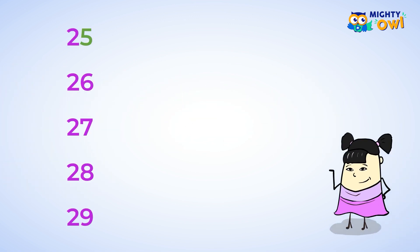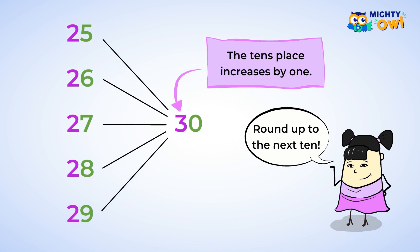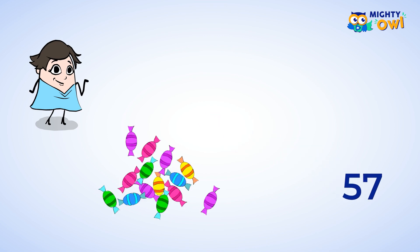If the ones place has a five, six, seven, eight, or nine, round up to the next ten. This means the tens place increases by one. Imagine you have 57 pieces of candy.